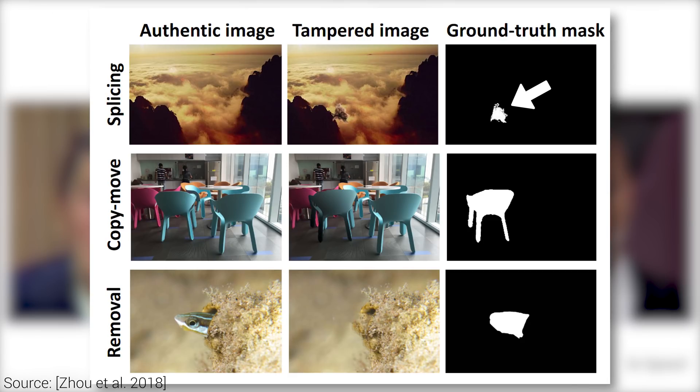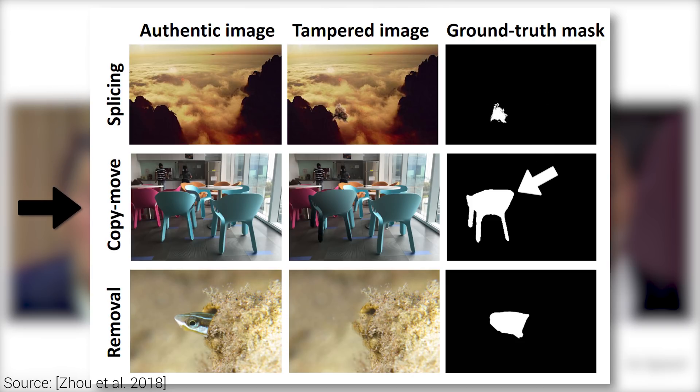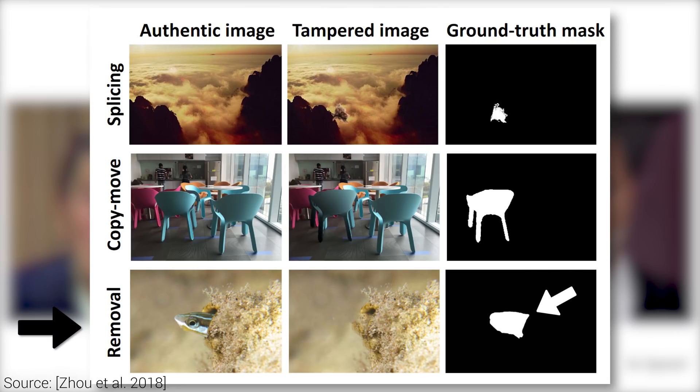It can detect image splicing, which means taking a part of a different image and adding it to this one. Or copying an object and pasting it to the image elsewhere. Or removing an object from a photo and filling in the hole with meaningful information harvested from the image — this we also refer to as image inpainting, and it is something we also use often to edit our thumbnail images here on YouTube.